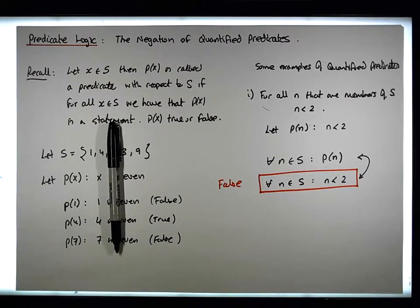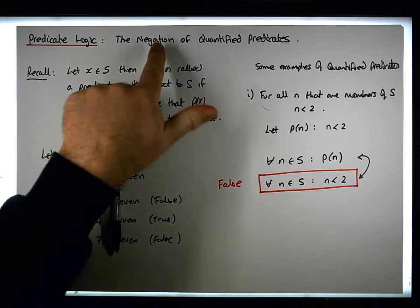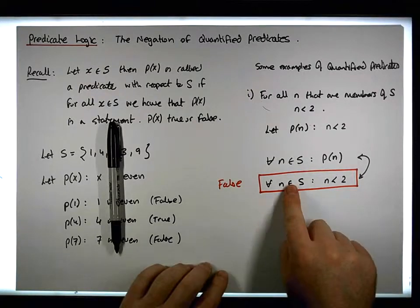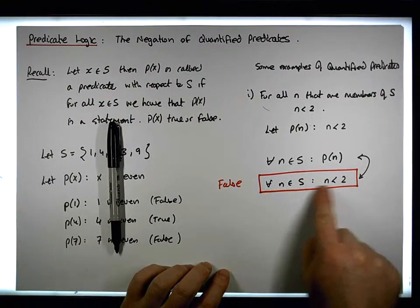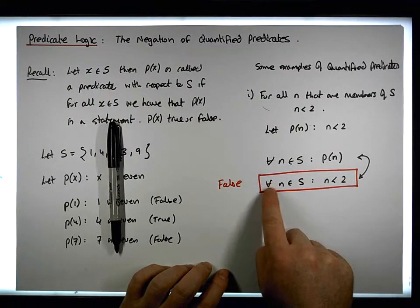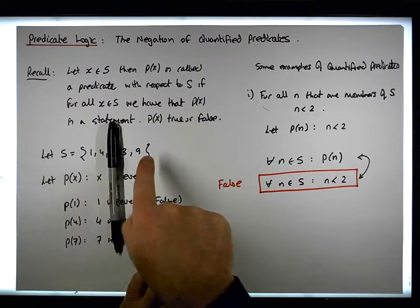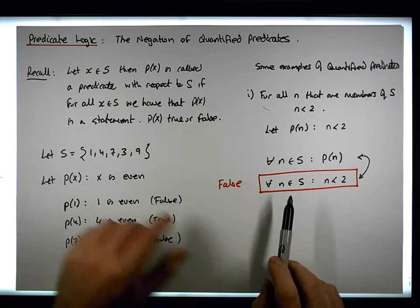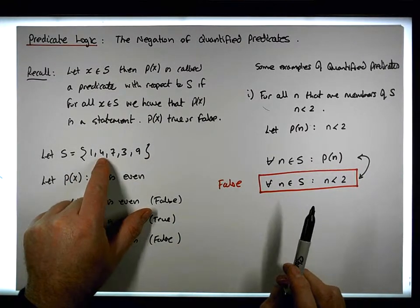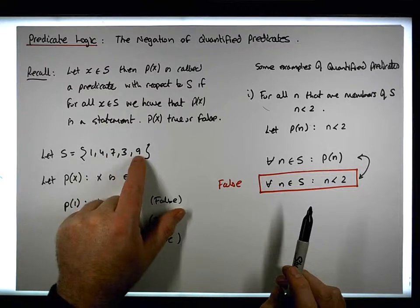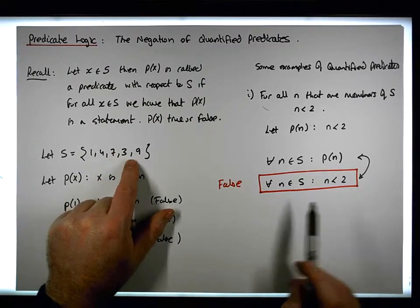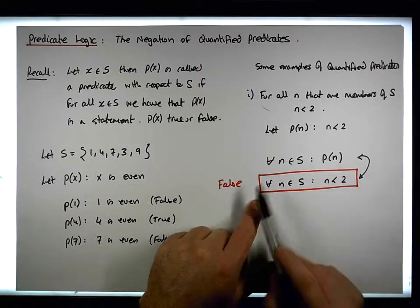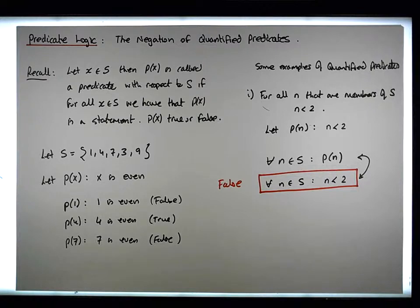The reason why this is false is that it's not true for all n's that are elements of s. It's not true for 4, 7, 3, and 9, because neither 4, 7, 3, nor 9 are less than 2. So overall, the quantified predicate is false.